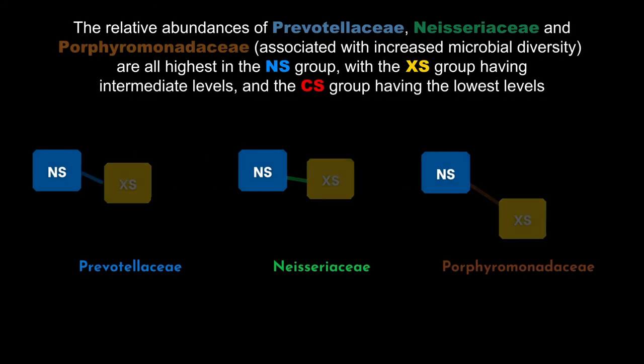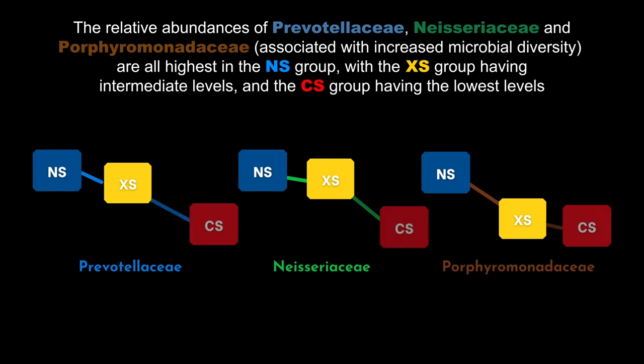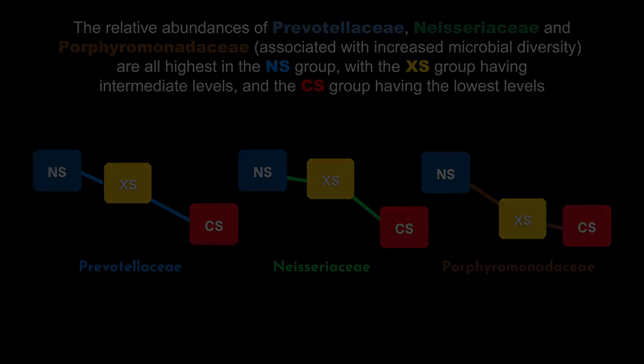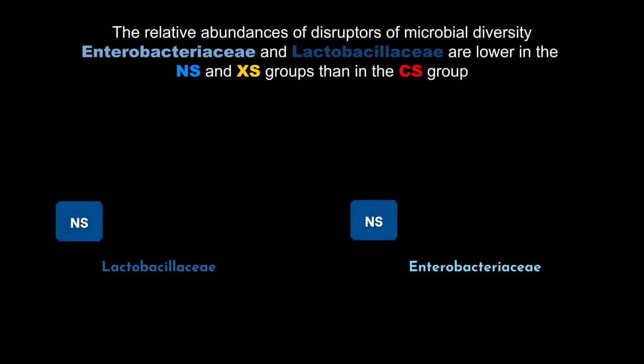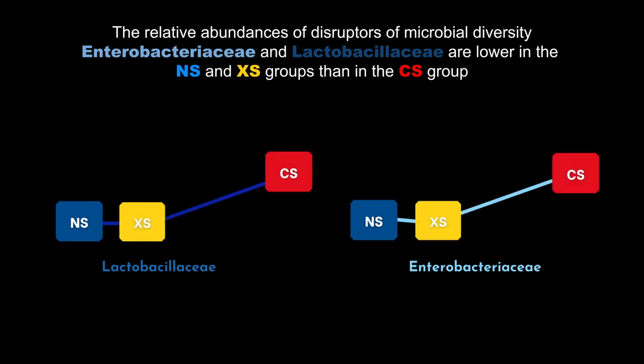To recap, we see changes in the following microbial luminal families based on smoking status. The relative abundances of Prevotellaceae, Neisseriaceae, and Porphyromonadaceae, which are associated with increased microbial diversity, are all highest in the NS group. The ex-smoker group has intermediate relative abundances and the CS group has the lowest. The relative abundances of Enterobacteriaceae and Lactobacillaceae, disruptors of microbial diversity, are lower in the NS and ex-smoker groups than in the CS group.